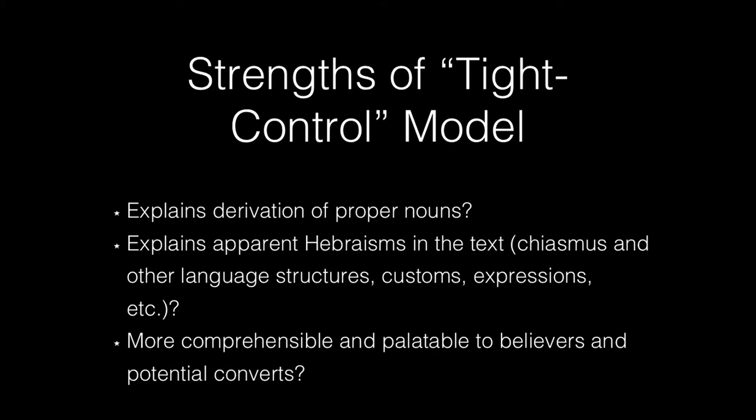One of the things we're going to consider here is the strengths and weaknesses of the tight control model. The tight control model does offer us some important things, one of which I would point out is explaining apparent Hebraisms in the text, such as chiasmus and language structure. Generally, it is easier to explain to someone that Joseph Smith translated this word for word than to say we don't know how much of Joseph Smith is in the text and how much is ancient. Much more is left to be wrestled with in the loose control model.